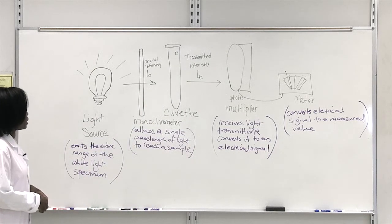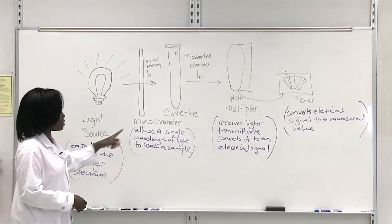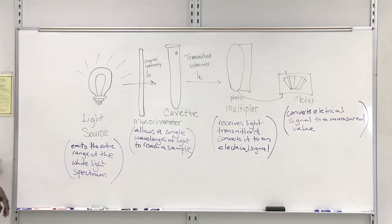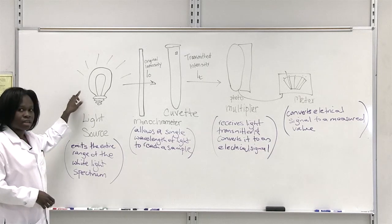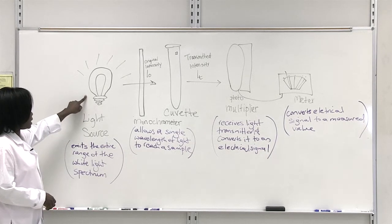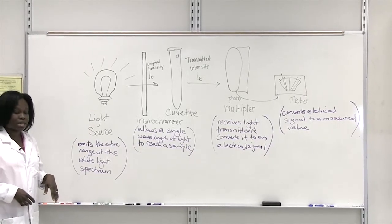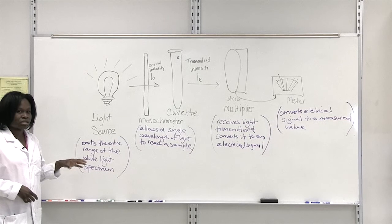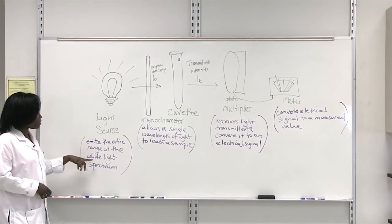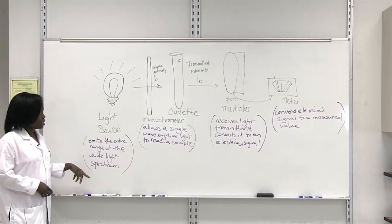And if you notice here, I have a diagram written on the board. And one important component that the spectrophotometer has is a light source. Now this light source can emit light at all different areas or range of the white light spectrum.